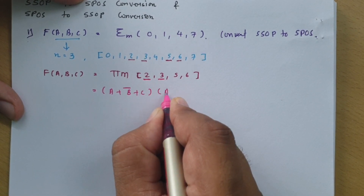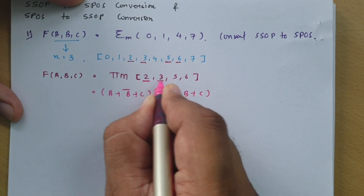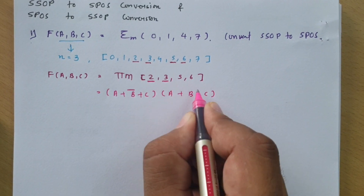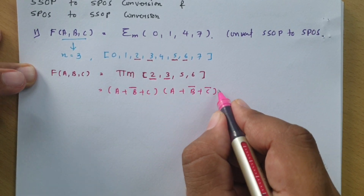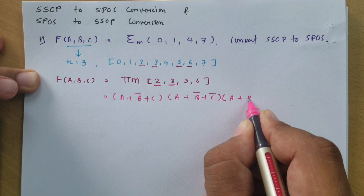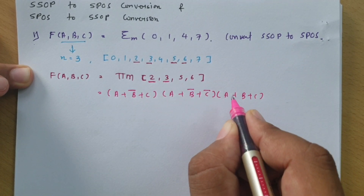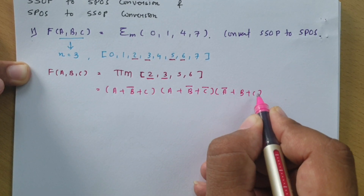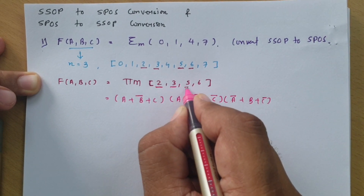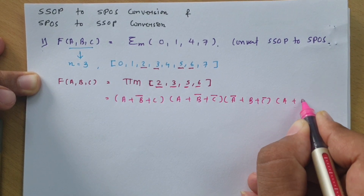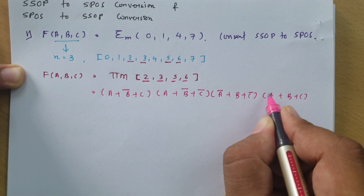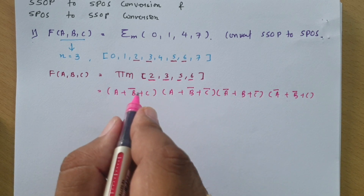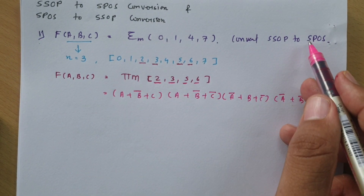For M3 representation, writing a plus b plus c: 3 is 0,1,1, so 0 means a, and 1,1 means b bar, c bar. For M5: a plus b plus c, and 5 is 1,0,1, so 1 means a bar, 0 means b, 1 means c bar. For M6: a plus b plus c, and 6 is 1,1,0, so a bar plus b bar plus c. This is how we write the function in SPOS variable form.